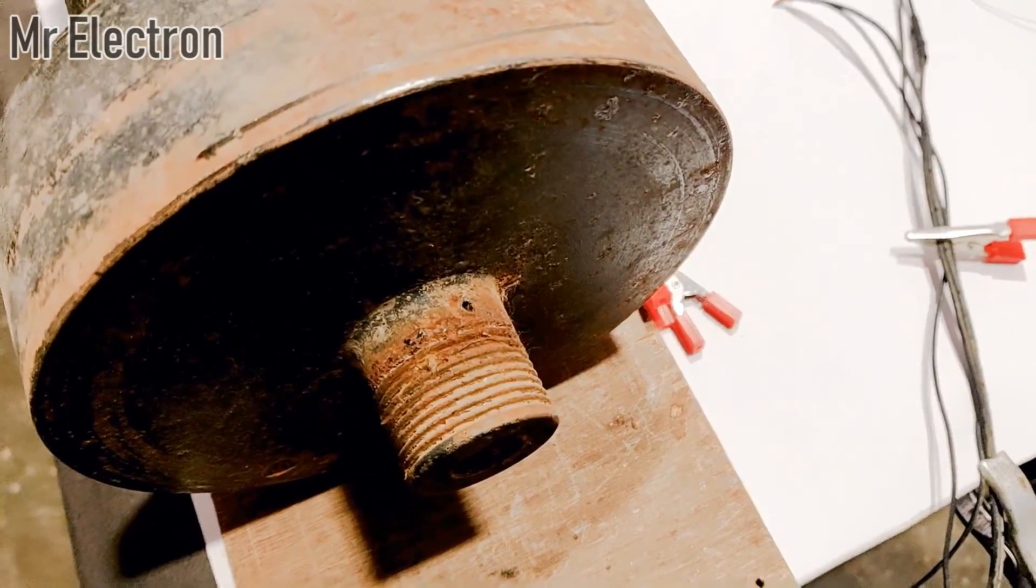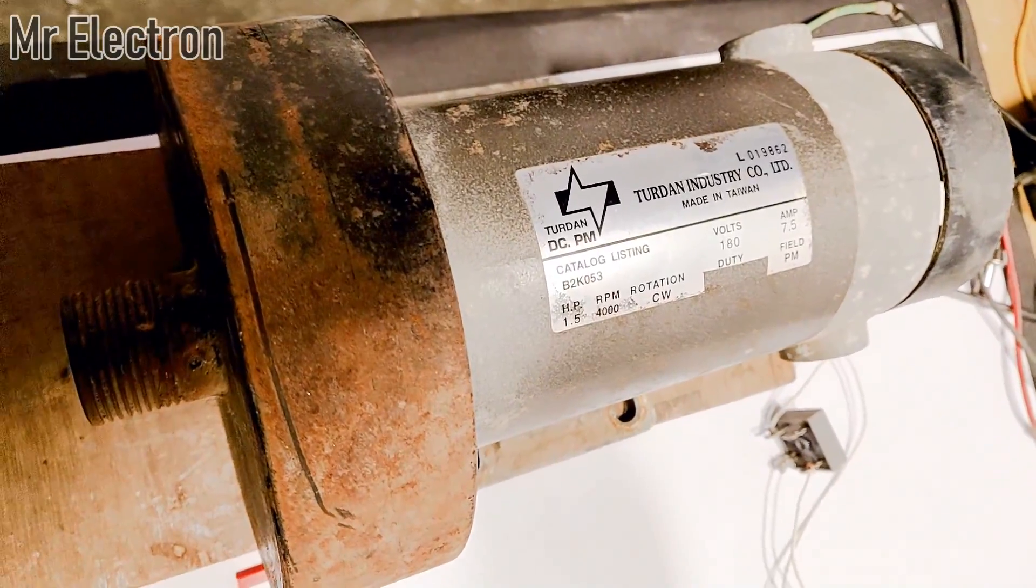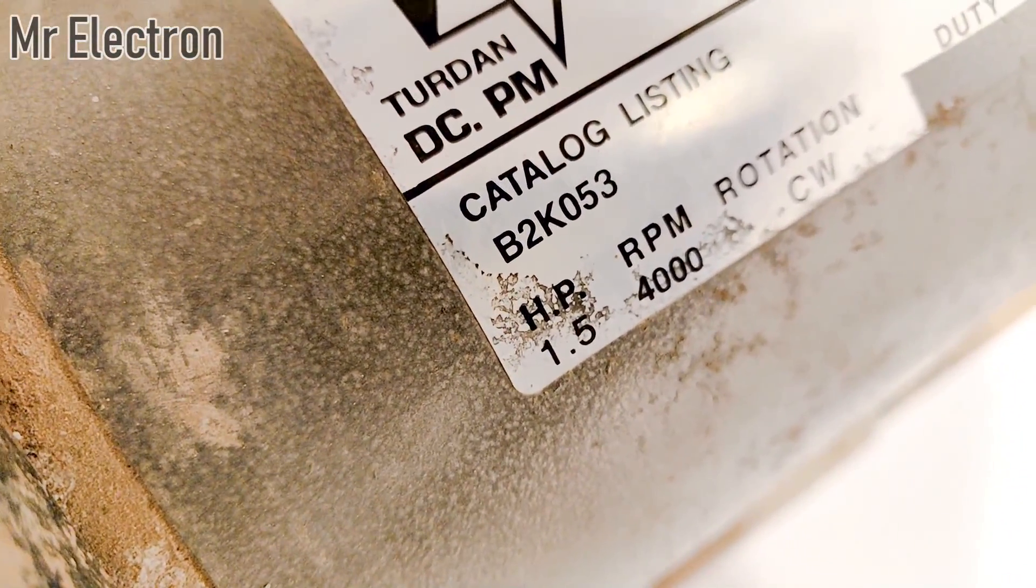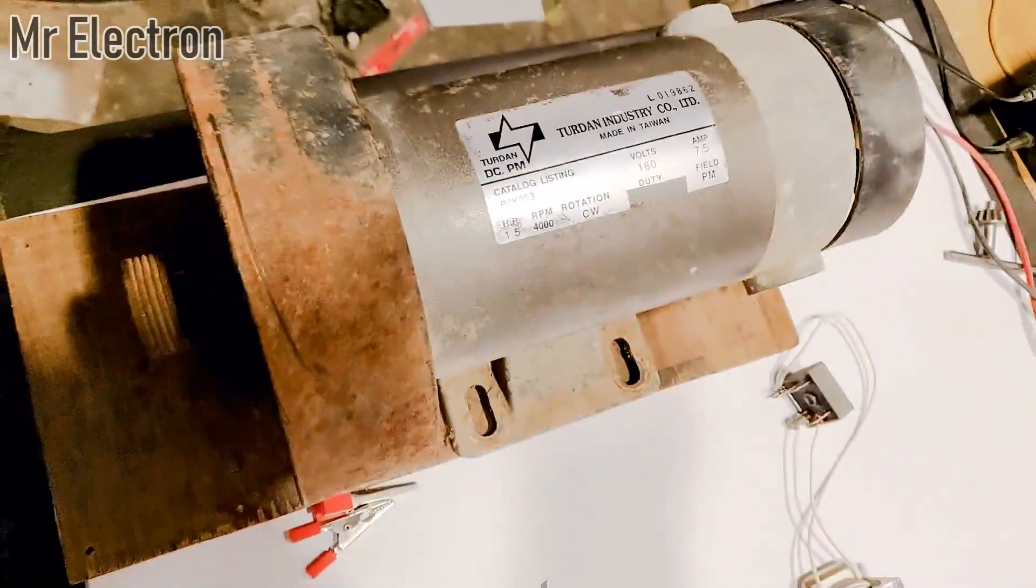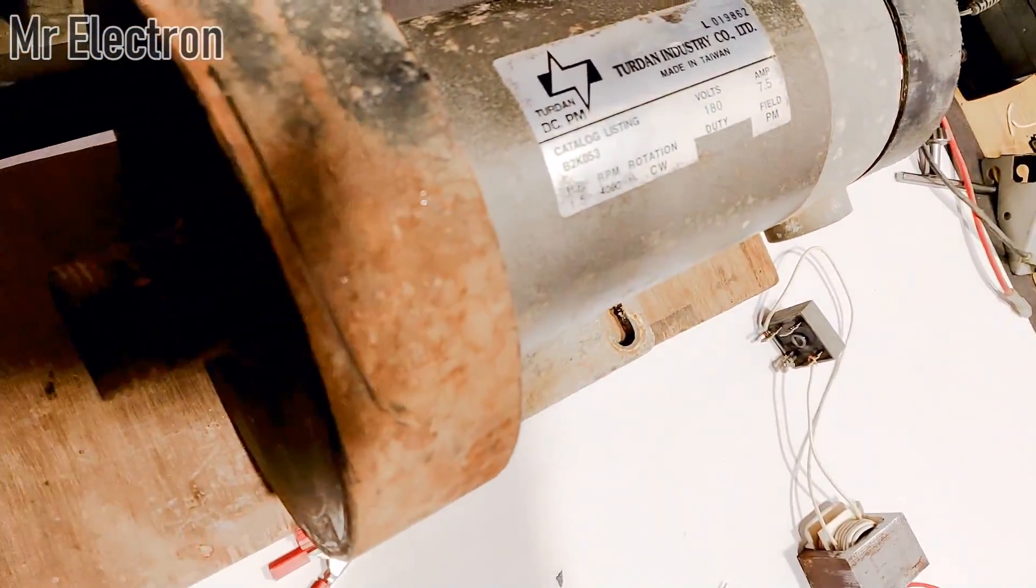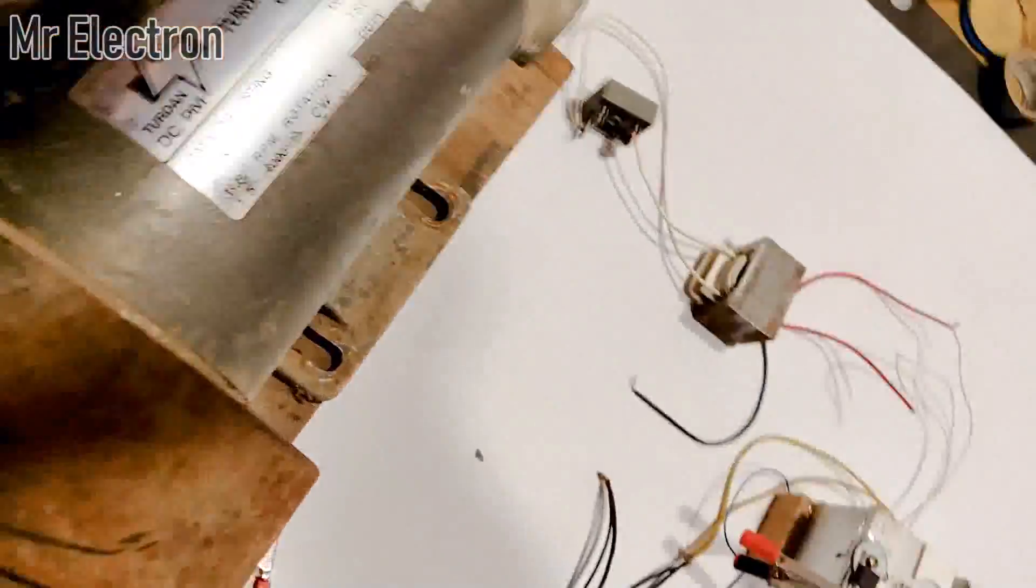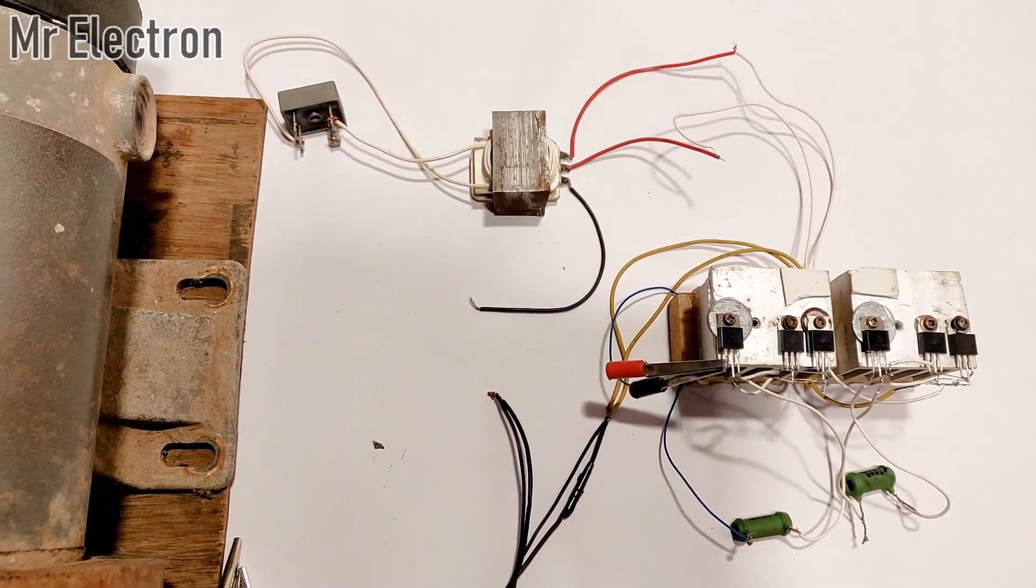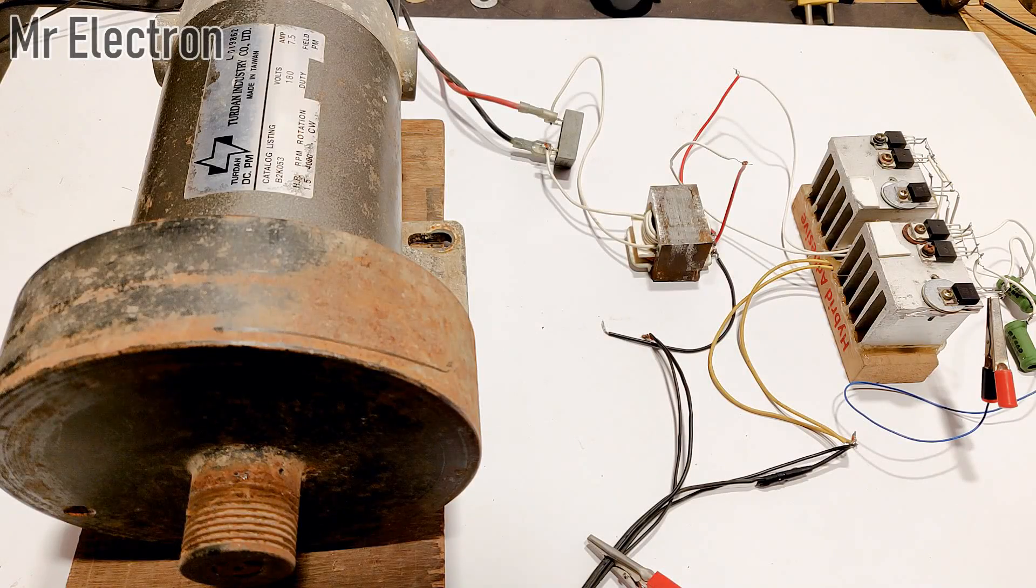I have another large PMDC motor, you can see here it is really big. It has 1.5 horsepower, 4000 RPM clockwise permanent magnet. So I'm going to test if this motor is going to run with this circuit that I have just made. Let's test this one as well.